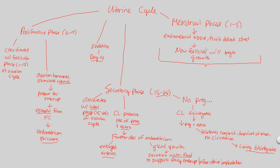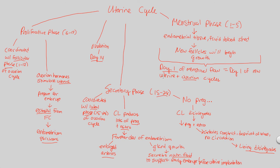This is a confusing point for many students, but it's very simple. Day one of the menstrual flow within females is considered simultaneously day one of new uterine and ovarian cycles. That's because day one of menstrual flow aligns perfectly with day one of the follicular phase — thus day one of the ovarian cycle — and it is of course day one of the menstrual phase of the uterine cycle. A new uterine cycle is signified by the start of menstrual flow. In a cycle, the end is the beginning.